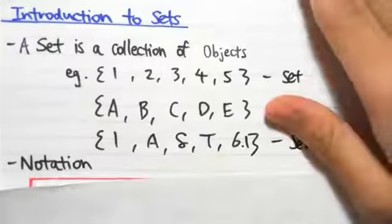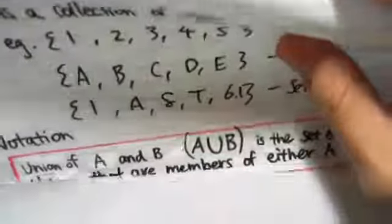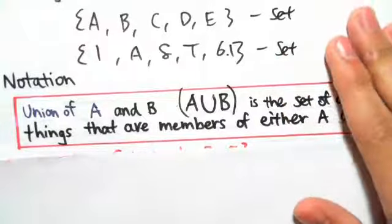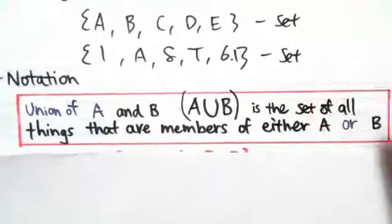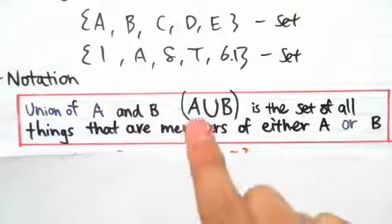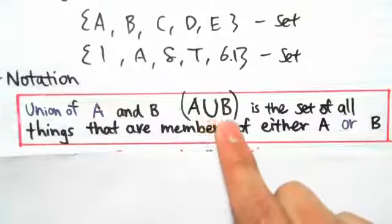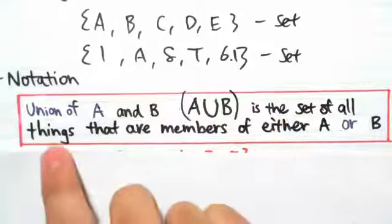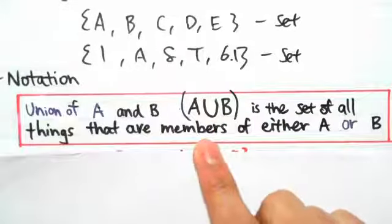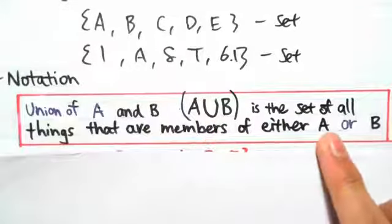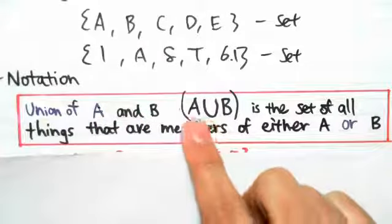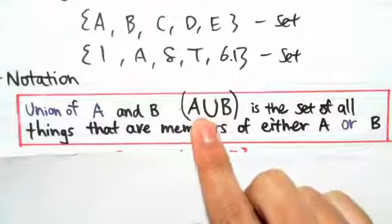First you want to start off with some notations. So the union of A and B, which we denote as A∪B, is a set of all things that are members of either A or B. That's what the union of A and B means — this notation here means union of A and B.